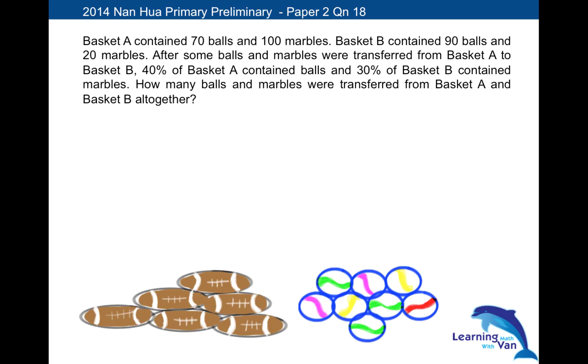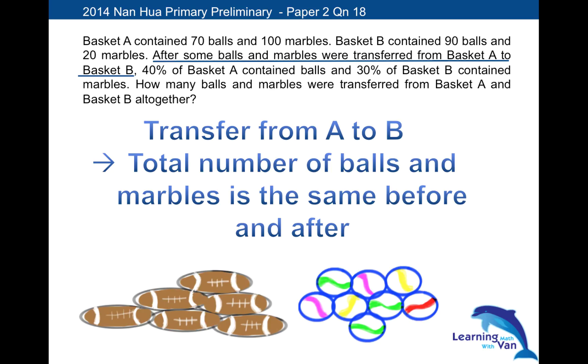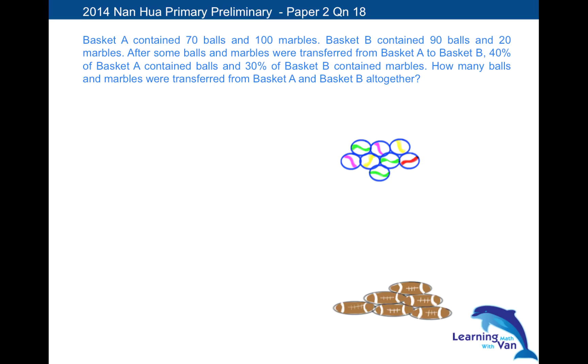And before we move on, there's another important hidden meaning here that students need to understand. What does it mean when some marbles and balls were transferred from basket A to basket B? Students must know that when there was a transfer from A to B within themselves, the total number of balls and marbles is always the same before and after. Having known that, solve whatever they could step by step. So since we know that the total is the same, let's work out what is the total number of balls: 70 plus 90 which is 160. And what is the total number of marbles? 100 plus 20 is 120. Remember this is in both basket A and B.